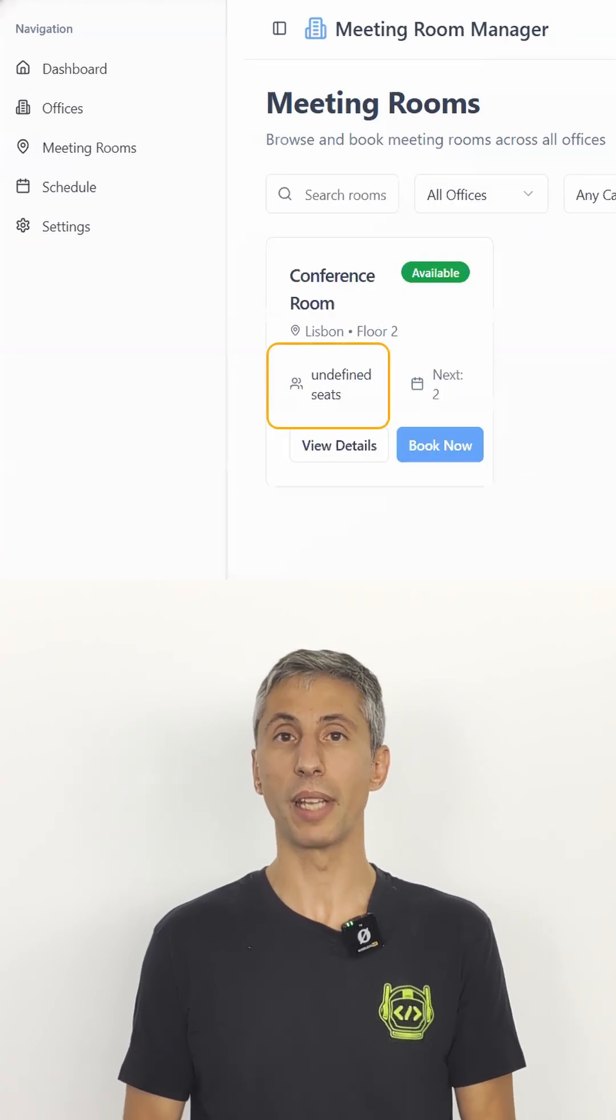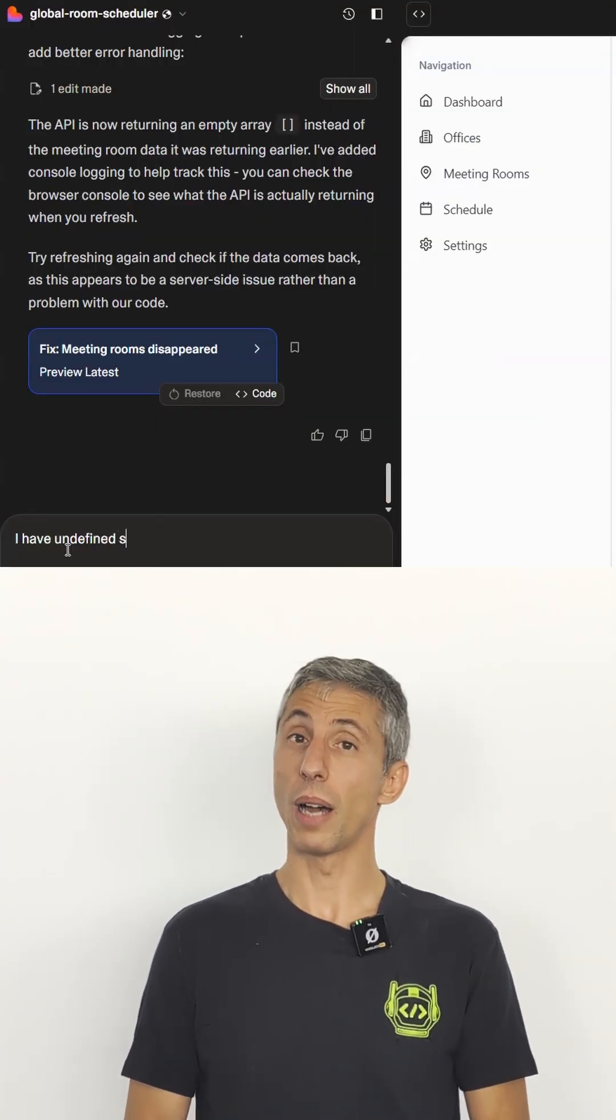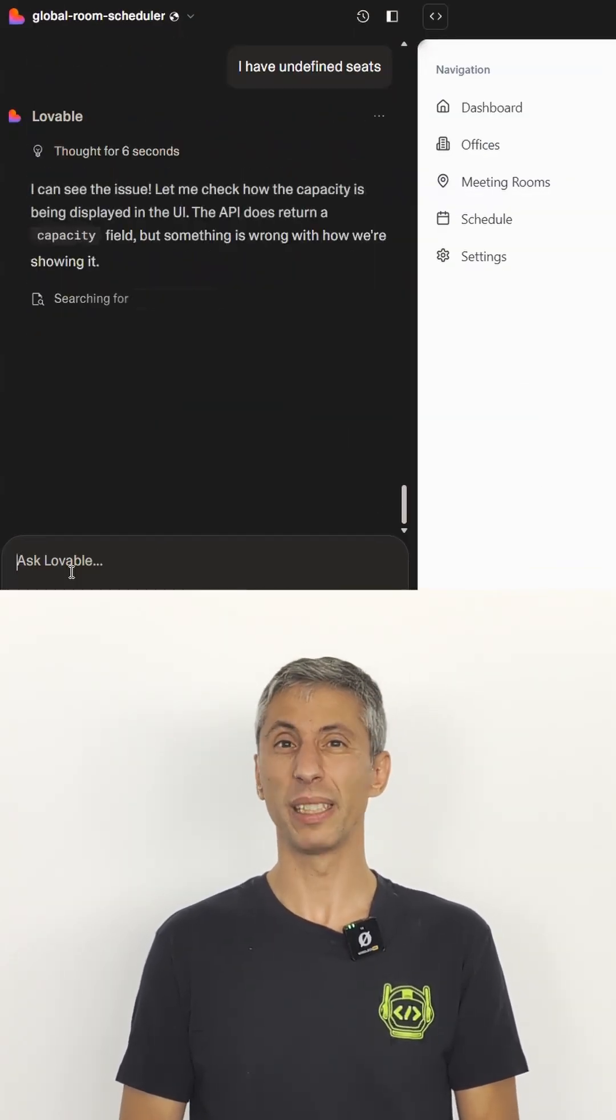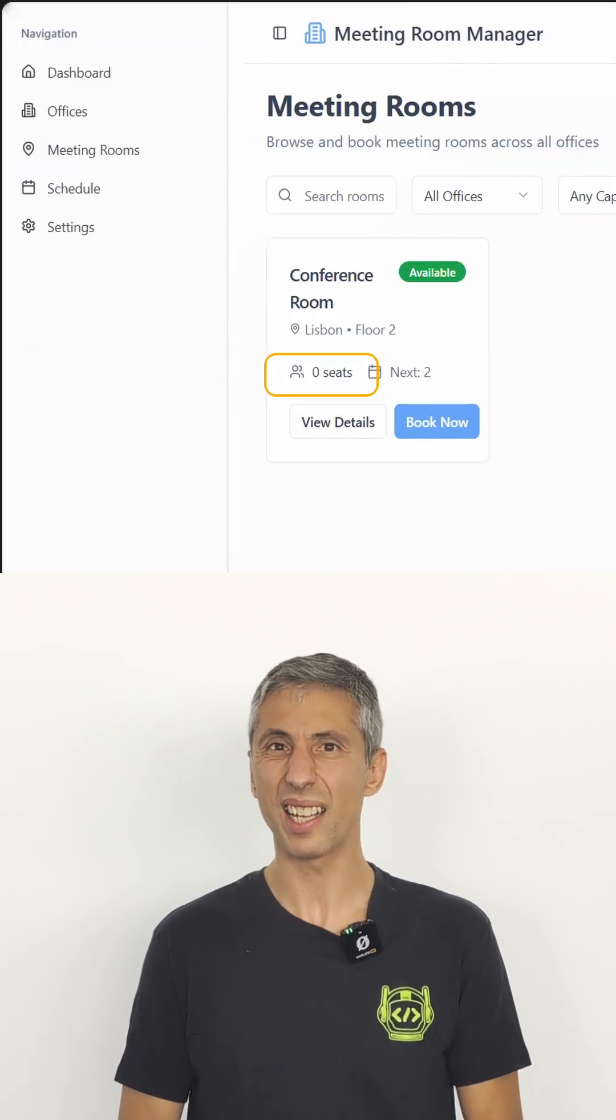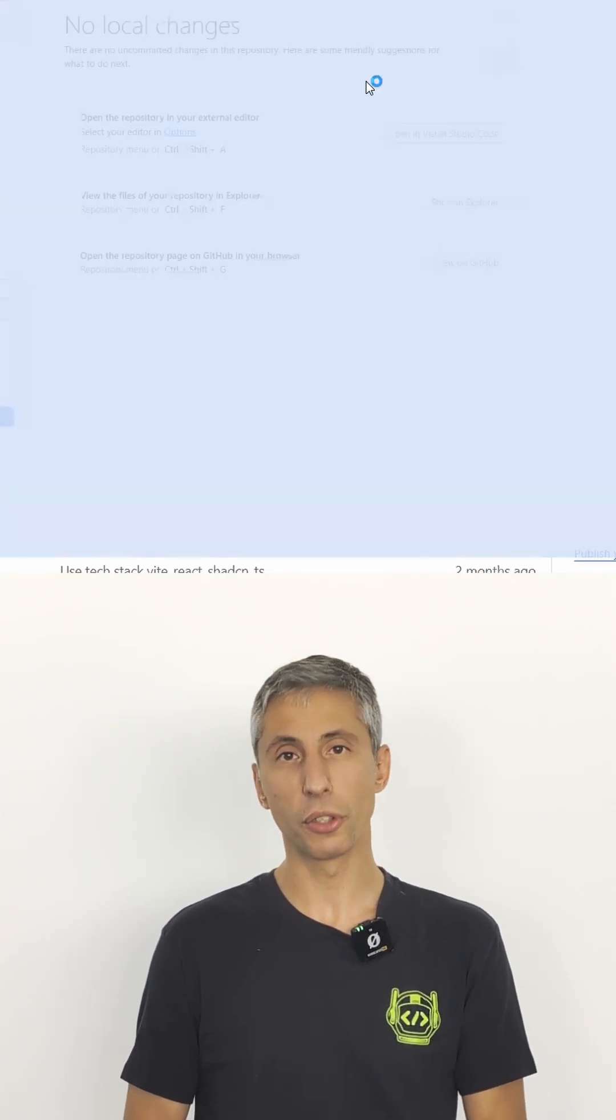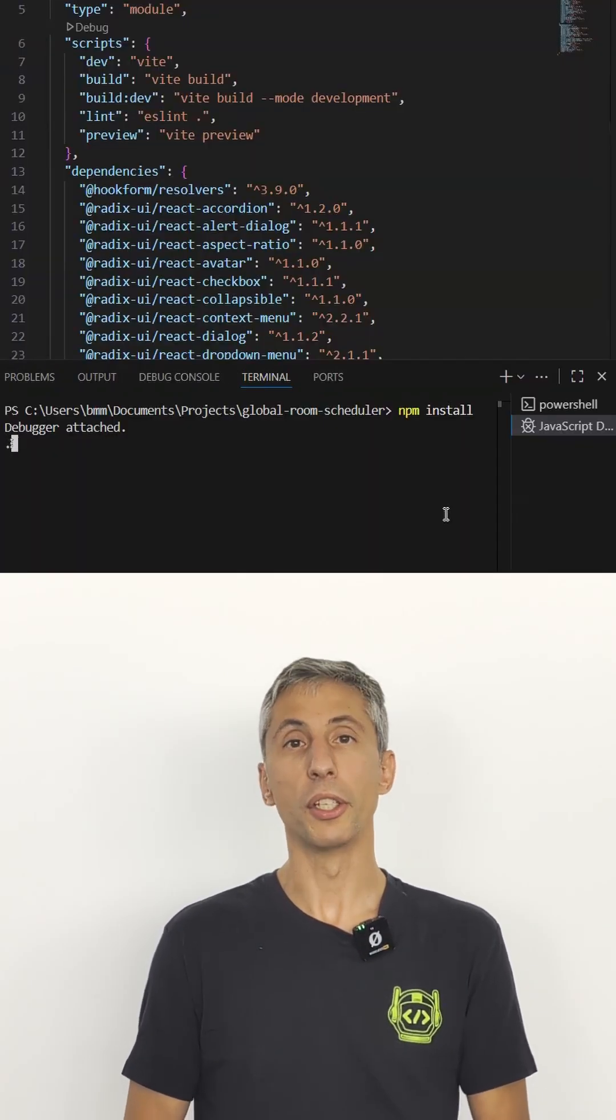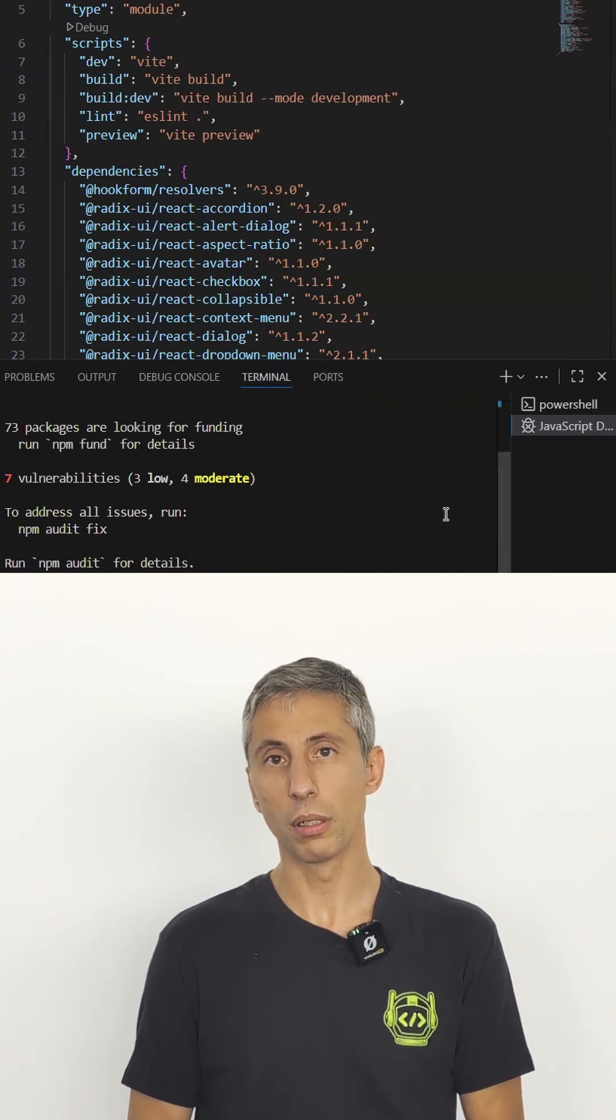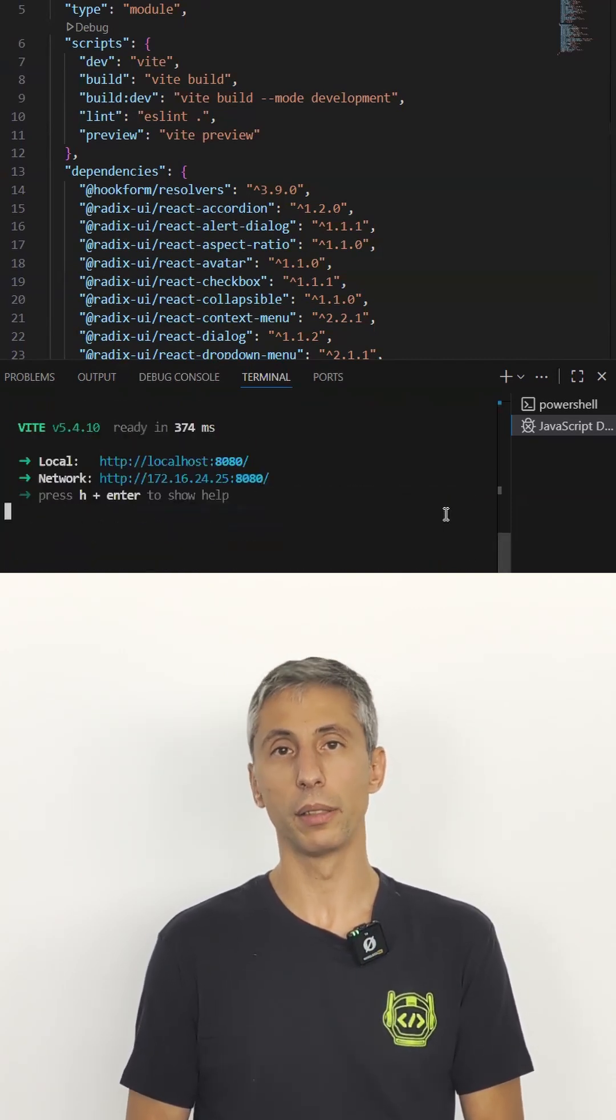I've built this application in Lovable, but now I'm facing this error. So I asked Lovable to fix it, but it didn't do that, it actually disguised it. Now I have to download the source code from GitHub, install all the dependencies on my machine, and troubleshoot line by line until I find the error.